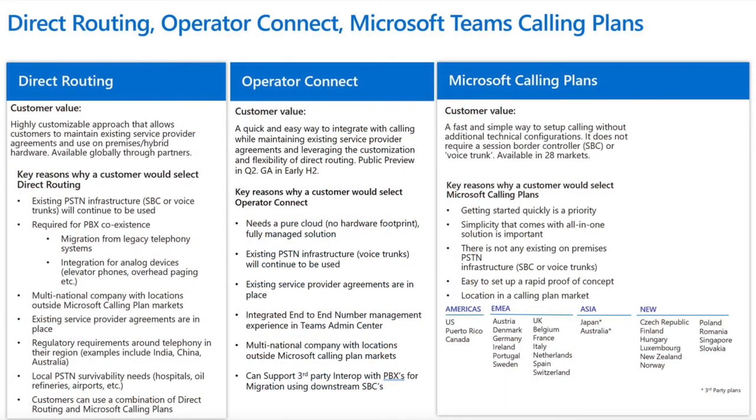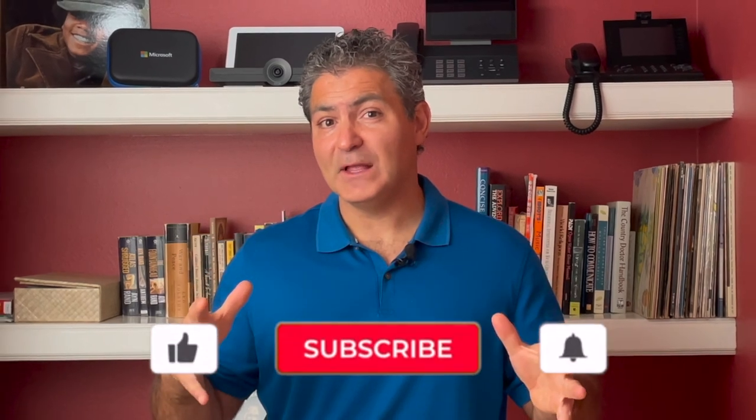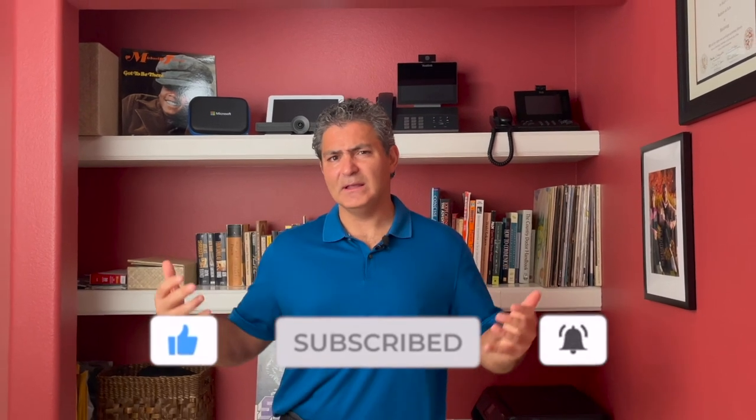For all you folks out there looking at the details, here's a couple of slides I'd share with you. This one talks about the difference between Operator Connect, direct routing, and Microsoft Calling Plans. And this one talks about the details on the technical side between direct routing and Operator Connect. I hope you found this session useful and I really hope that you level up and add a phone number to Microsoft Teams — it's so easy and it really increases your productivity at work. If you have any questions, drop them in the comment section below and I'll catch you on the next one. Check out some of these similar videos and don't forget to subscribe.